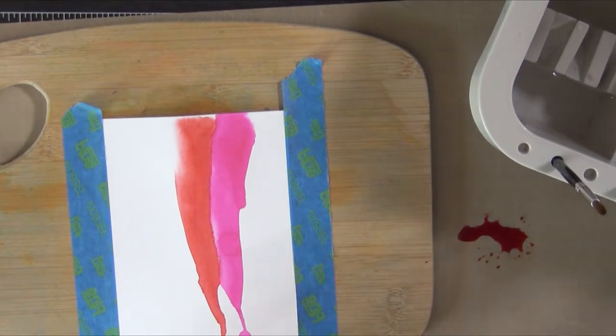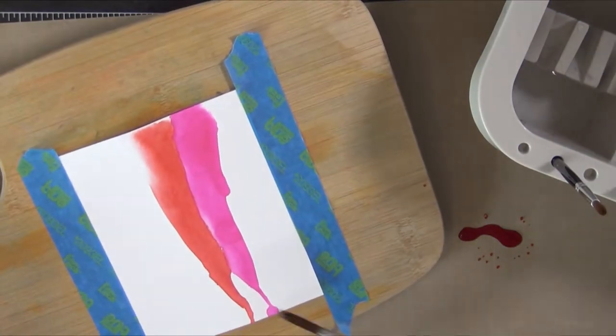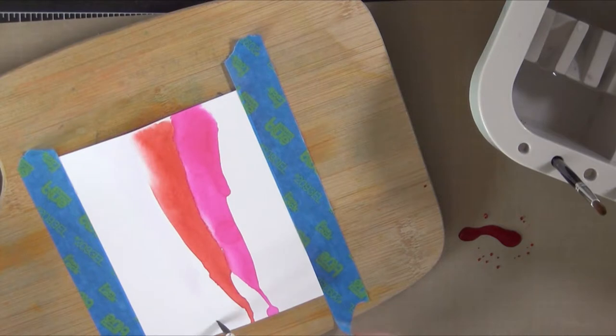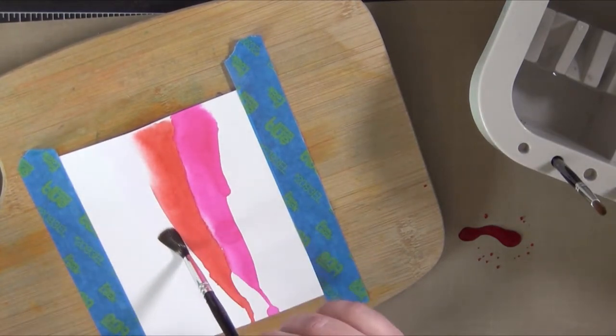Coming in with the next color of Distress Stain which is Abandoned Coral. I guess I should have mentioned the other colors I used. The one in the center was Candy Apple and the one to the right, the bright pink delusion, was Bubblegum Pink.